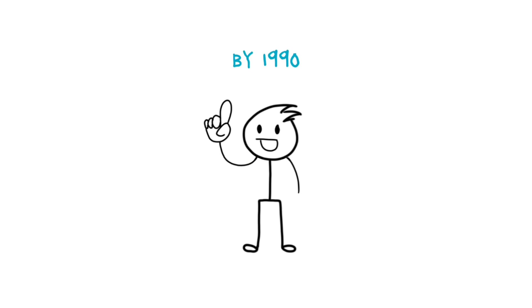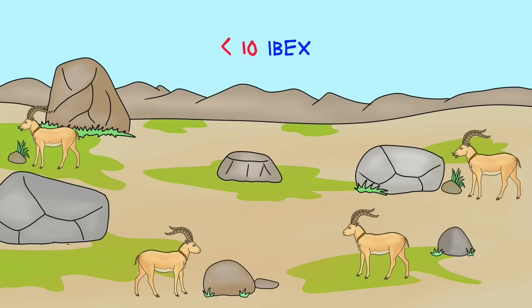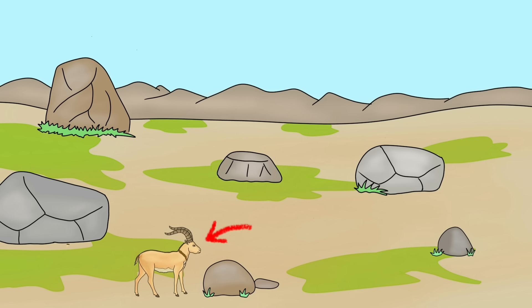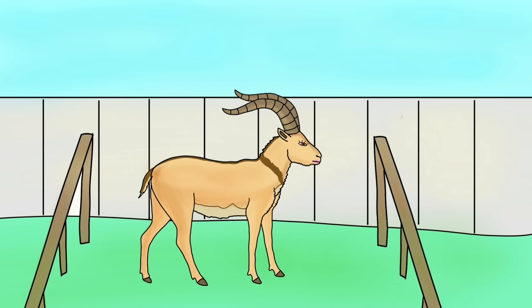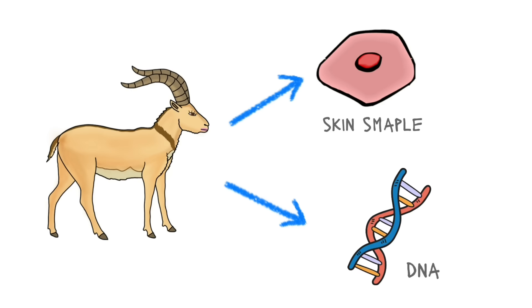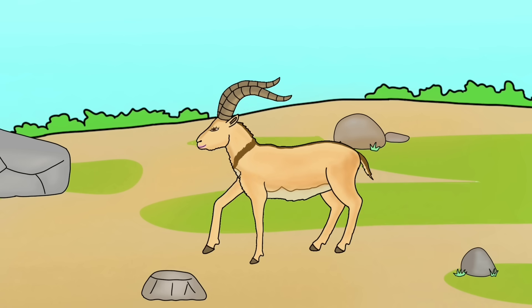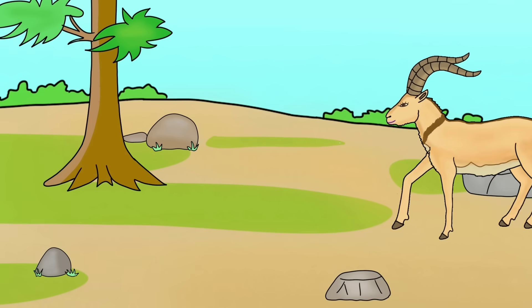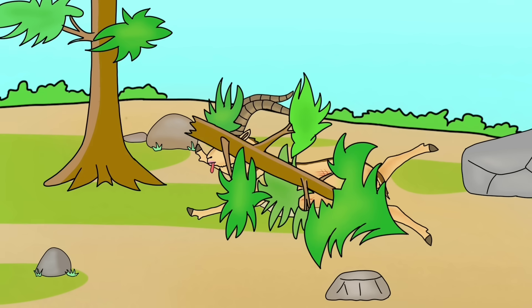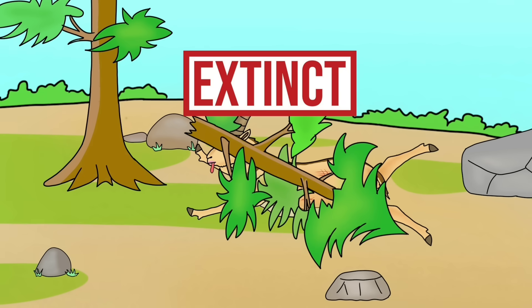In any case, by 1990, less than 10 were remaining. By the late 1990s, a female ibex named Celia was the sole survivor. So, she was kept in captivity, skin samples and DNA were taken, and then she was sent back to the national park. While she was walking, a tree fell and crushed her head, and the species got extinct by that falling tree.